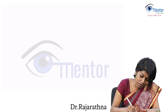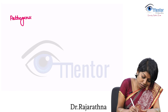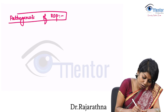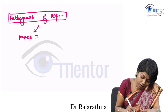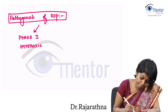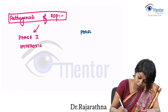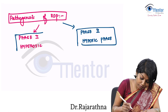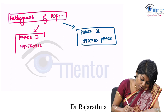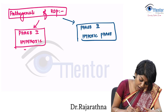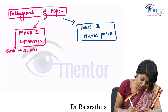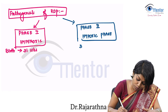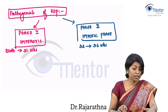Now let us see the pathogenesis of ROP. This is divided into two phases: Phase 1, which is a hyperoxic phase occurring around birth to 31 weeks, and Phase 2, which is a hypoxic phase happening between 32 to 36 weeks.